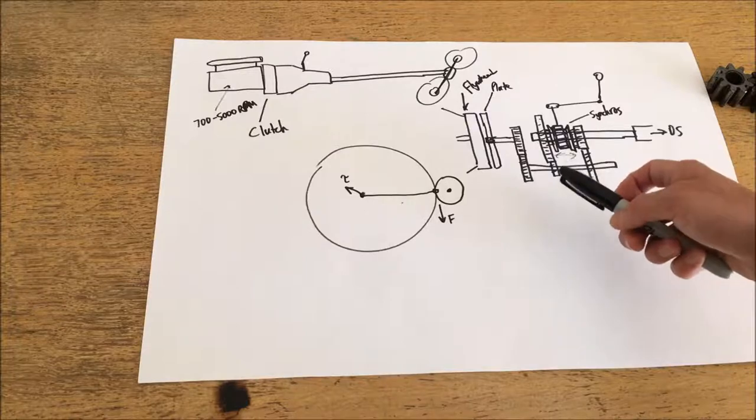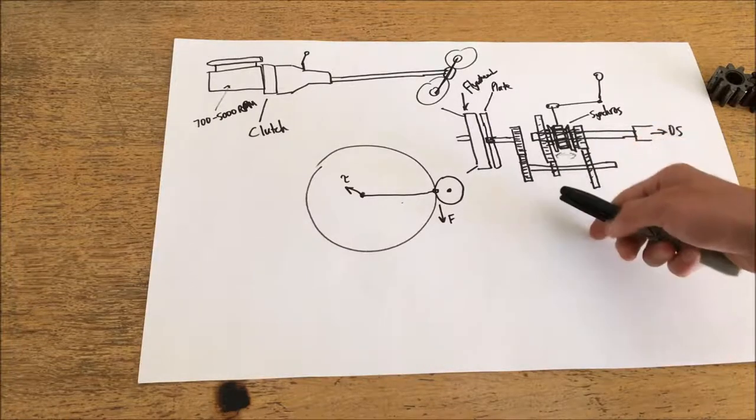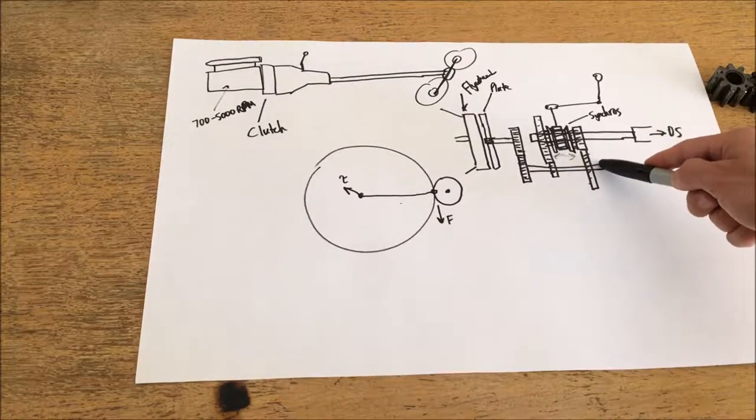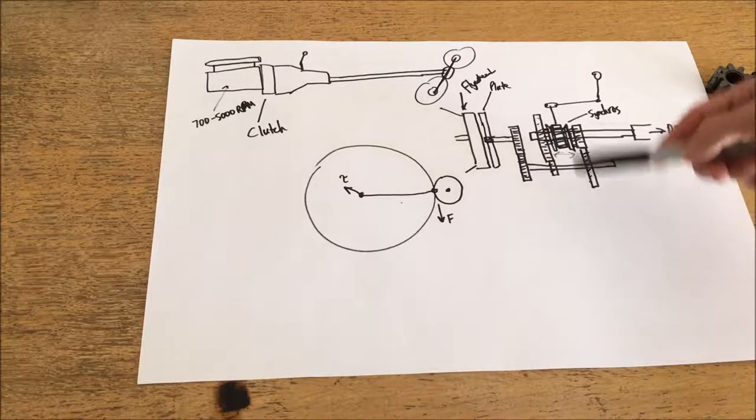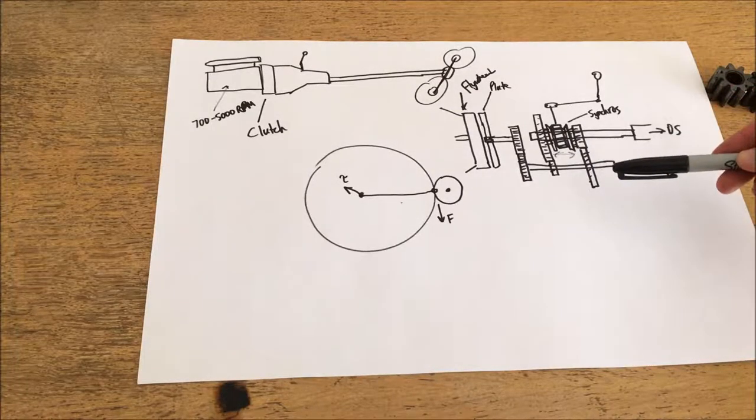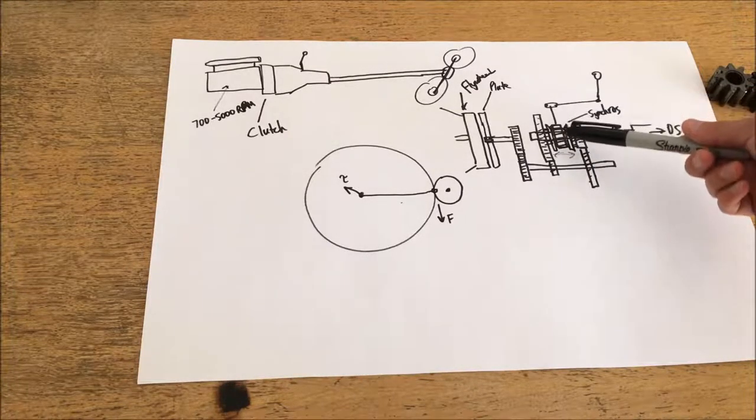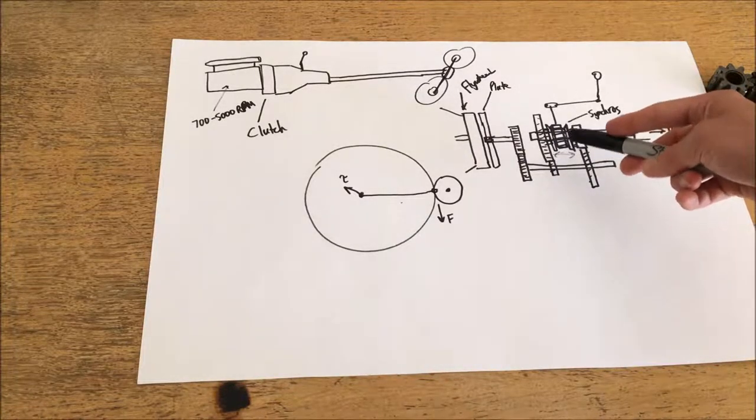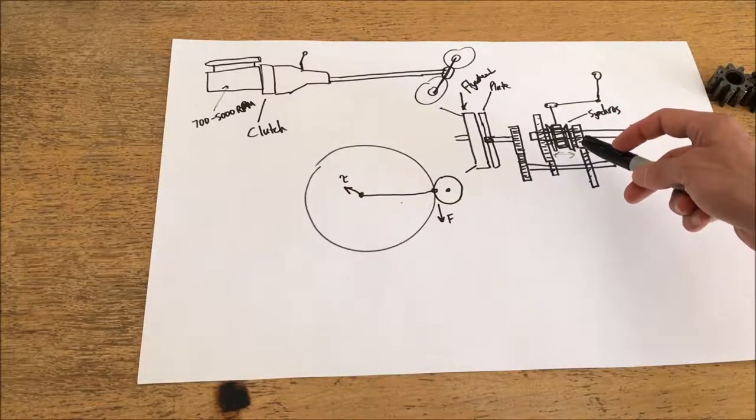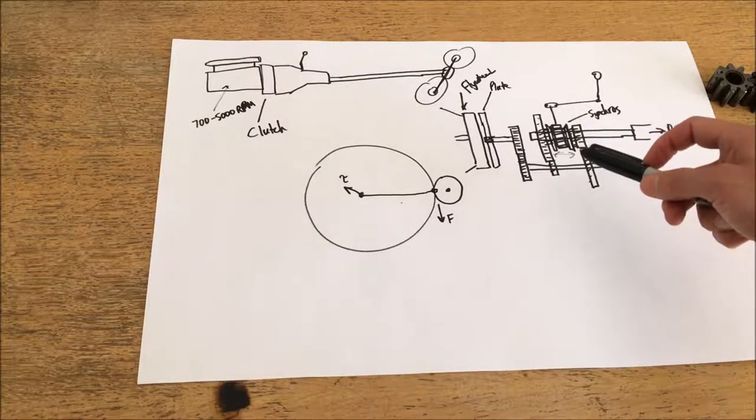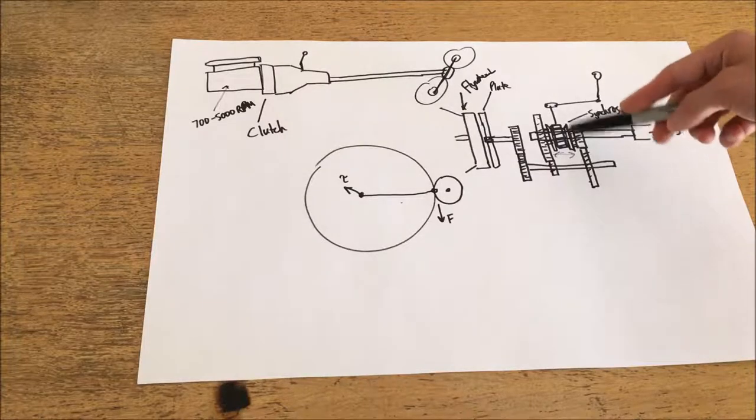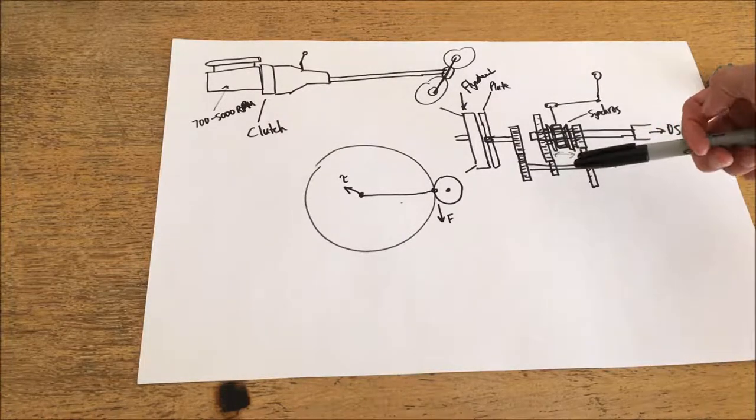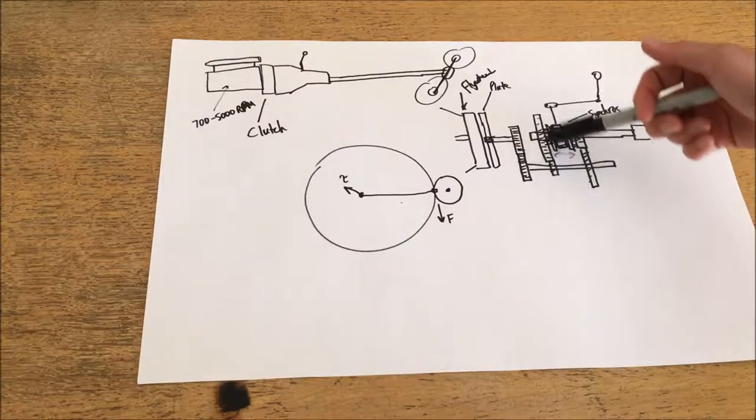Now this doesn't necessarily make for a smooth shift on its own, because even if the clutch is applied, the counter shaft may have enough momentum on its own to be spinning very fast. The purpose of the synchros is of course to match that speed and they can do that regardless as long as the clutch is applied, but it is better for the transmission to allow these synchros to do as little work as possible by pre-matching the speed of the gears.